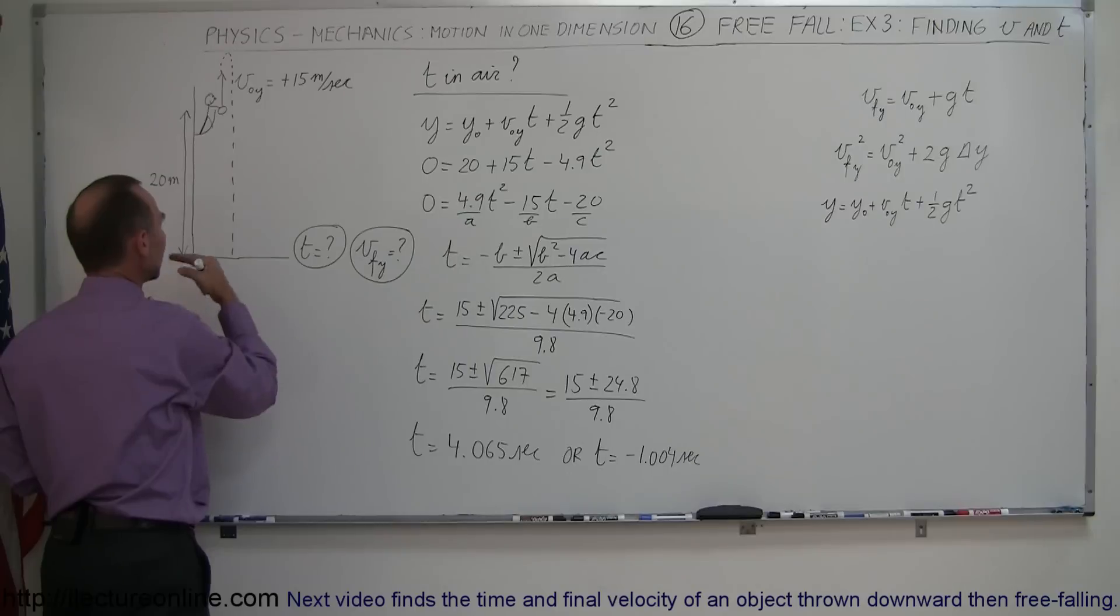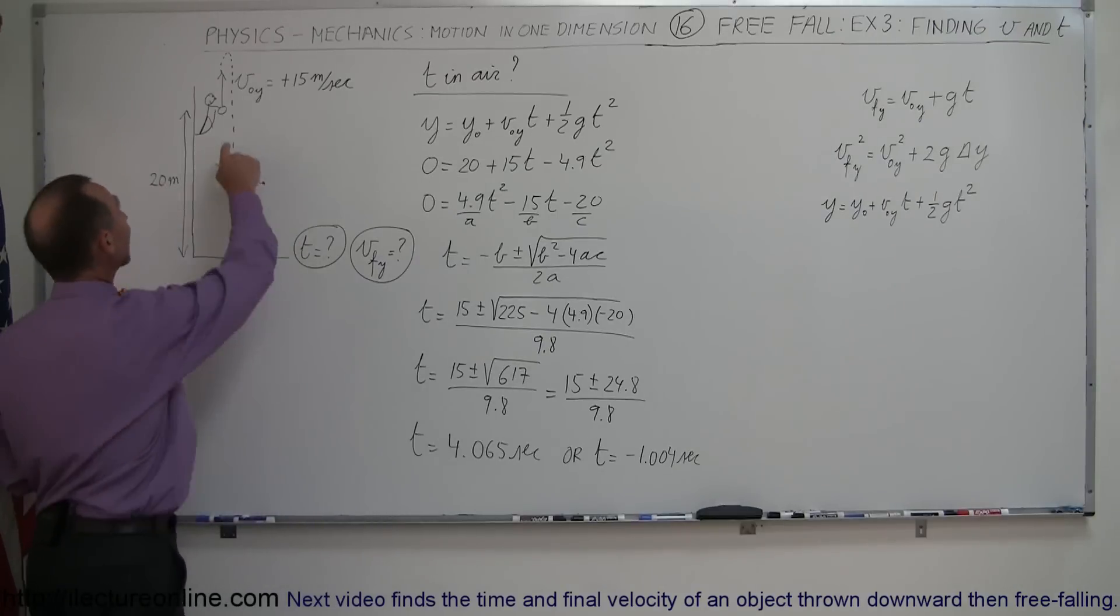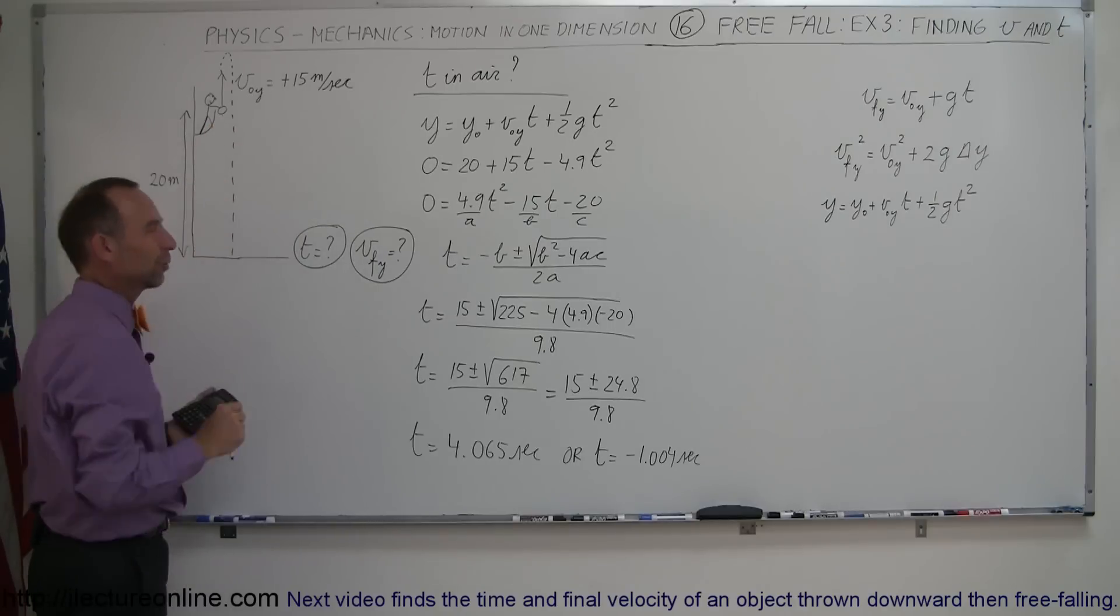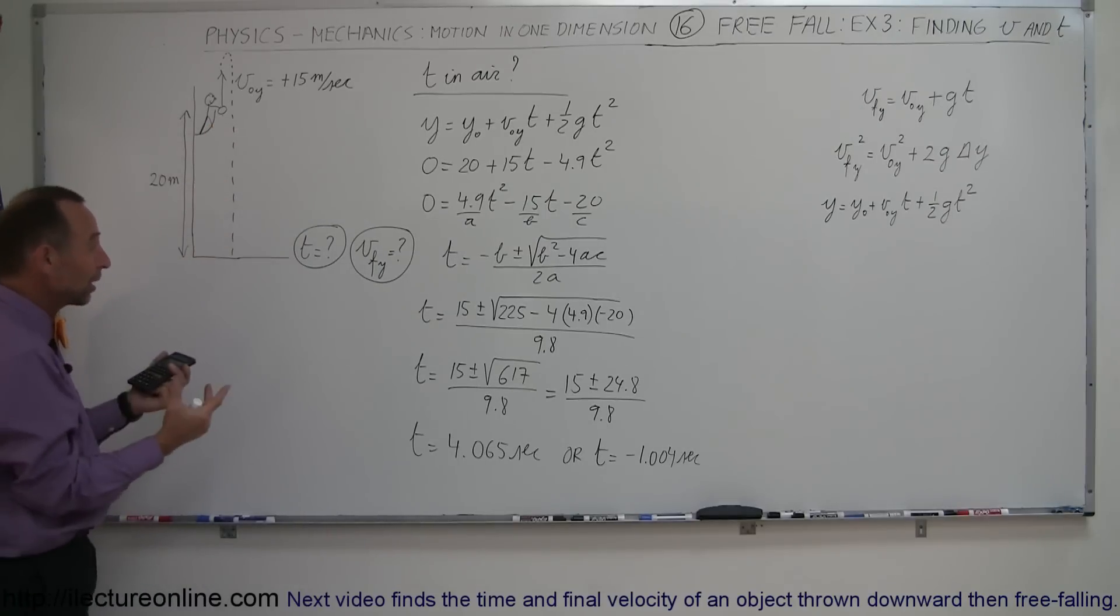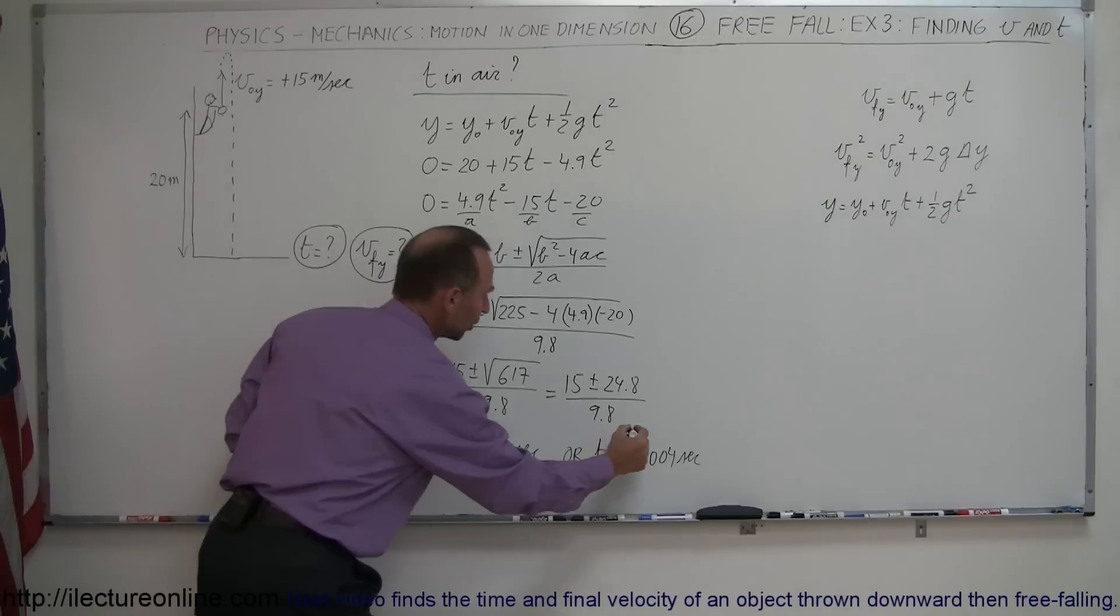You would have to throw the ball with a certain initial velocity 1.004 seconds before it gets to this point. So that's a time that it would have been on the ground if the problem started from here, rather than from there. So it does have a real meaning, although in this particular problem, since we didn't throw it up from the ground, we can just kind of ignore this answer.